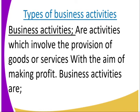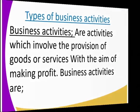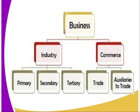Before I go to the types, let us look at the business activities. Business activities are activities which involve the provision of goods and services with the aim of making profit. All those activities that involve provision of goods and services are referred to as business activities, and these activities must have a vision of making profits. We have a number of them: industry, commerce, primary, secondary, tertiary trade, and auxiliary of trade — all these are activities of business.